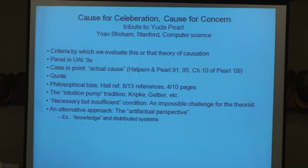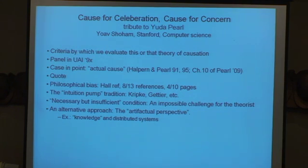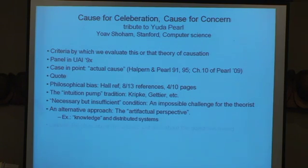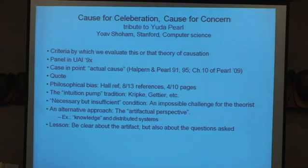It turns out, through some miracle, that it's exactly the same abstractions used by philosophers — in particular Hintika — to reason about an ideal notion of knowledge, and through a compounding miracle, in game theory by Aumann to reason about information in game theory. What do you learn from that? You learn that you have to have a precise artifact, and you have to be very clear about the set of questions you are willing to entertain about this artifact.